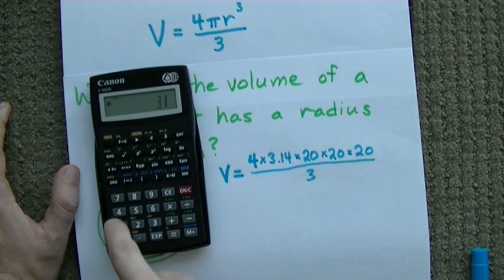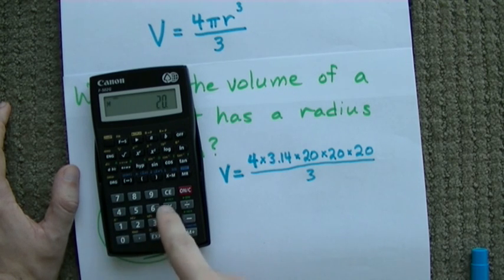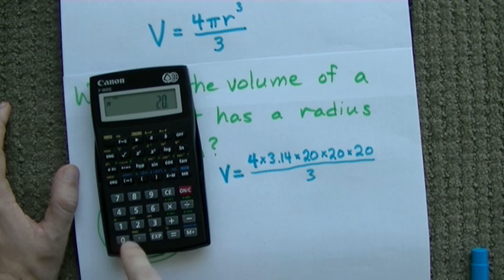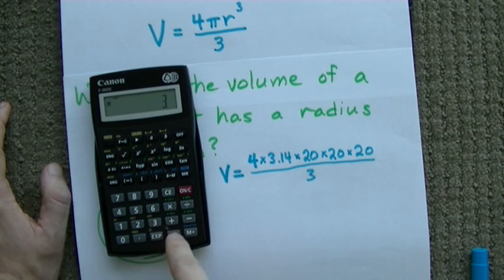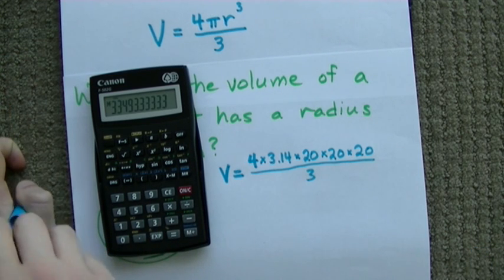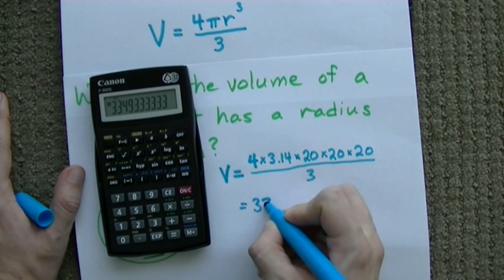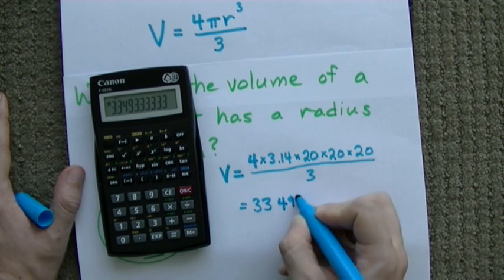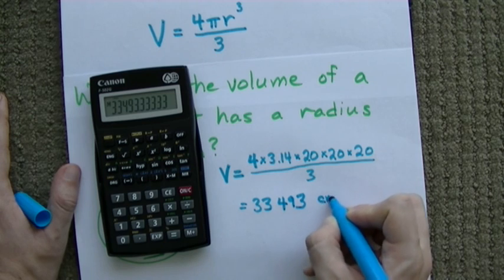4 times 3.14, times 20, times 20, times 20. And then divide by 3. I get 33,493 centimeters.